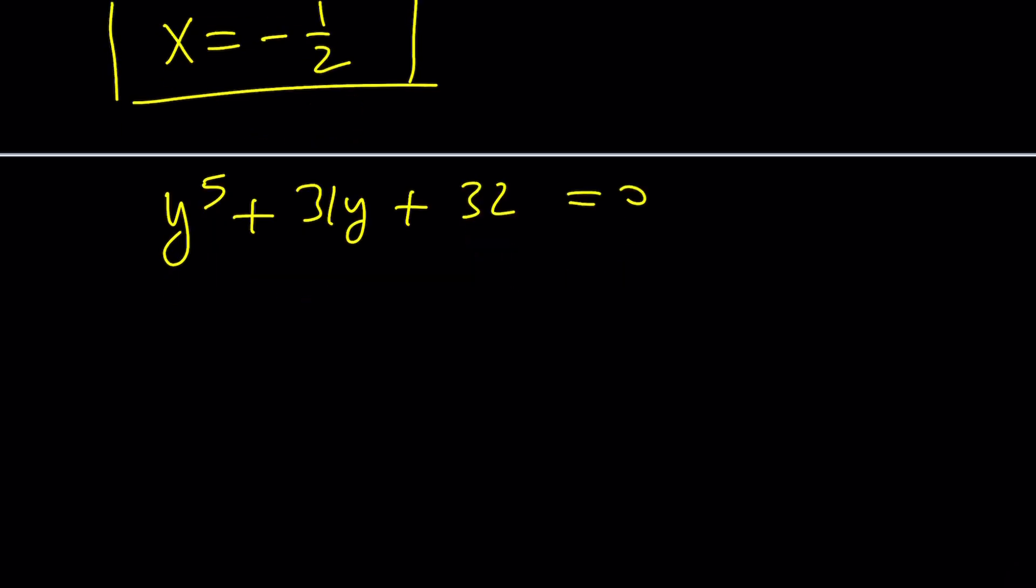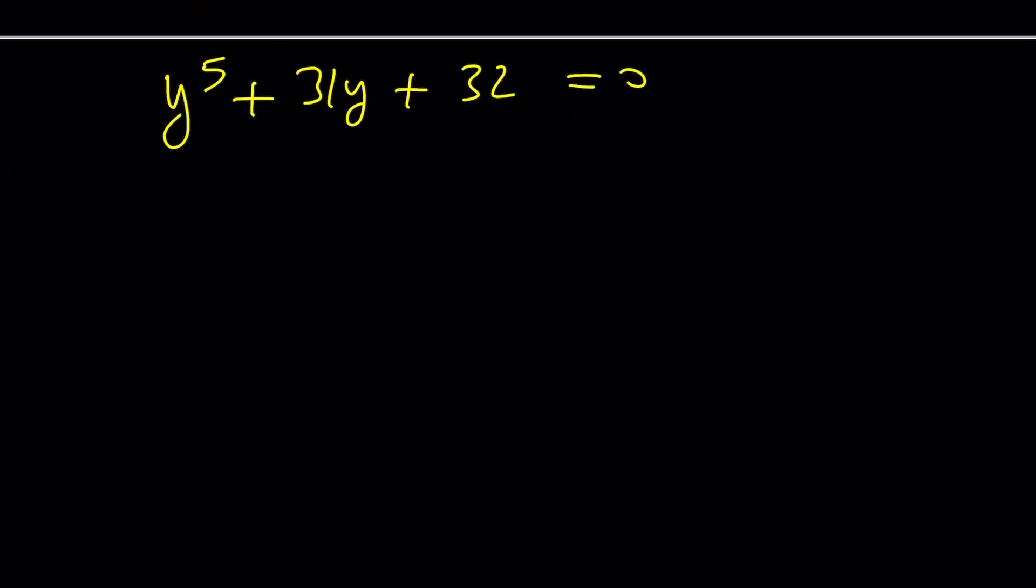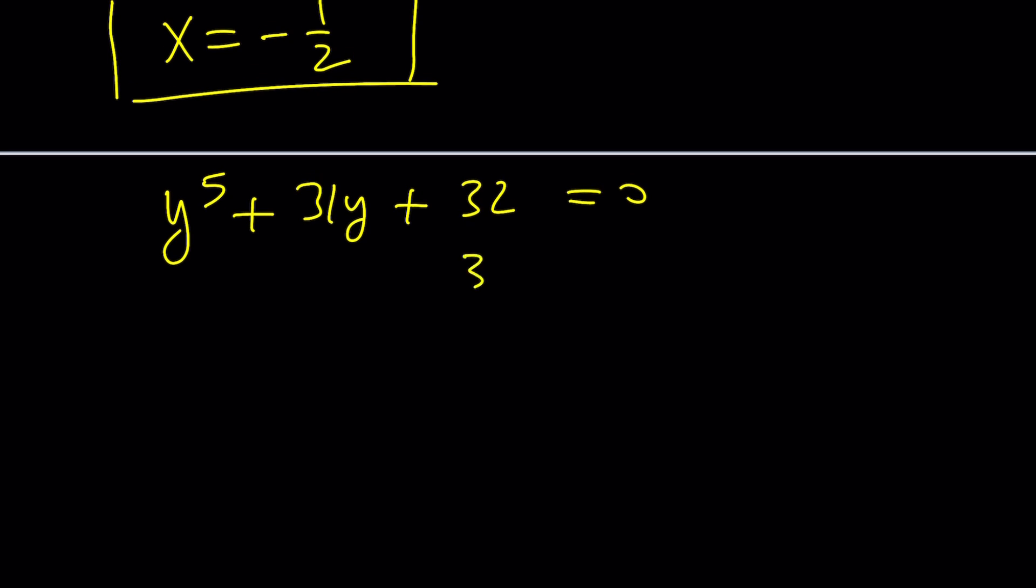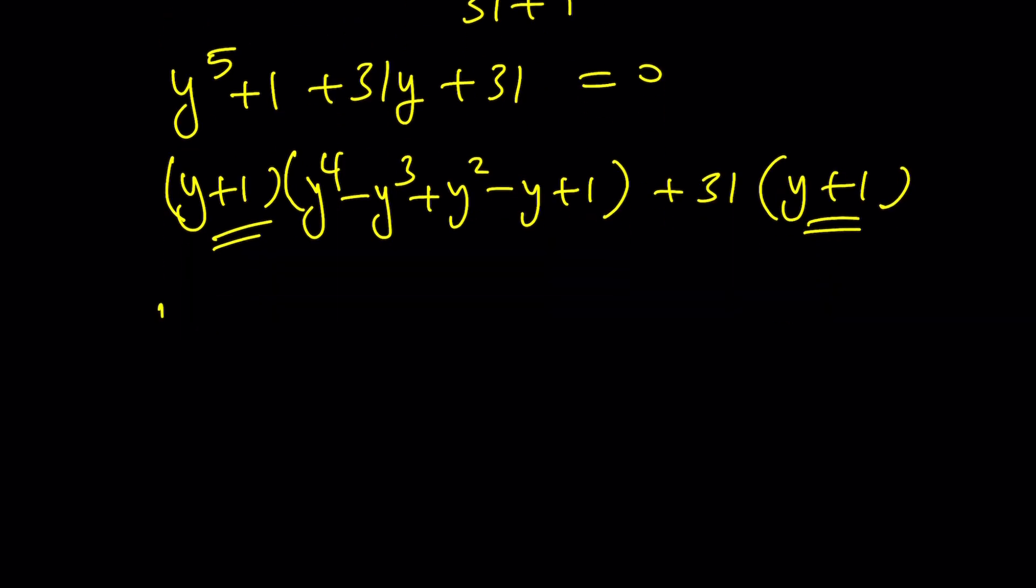Where do we go from here? Once we know that x equals negative 1 half, we could factor it. But there's an easy way if you consider the y world. Since y equals negative 1 is a solution, I can manipulate this. Notice that 32 is 31 plus 1. y to the fifth plus 1 and 31y plus 31. It seems to be working because this is factorable, sum of two fifth powers. We can factor out y plus 1. The second factor becomes y to the fourth minus y to the third plus y squared minus y plus 1 plus 31, that would be 32.